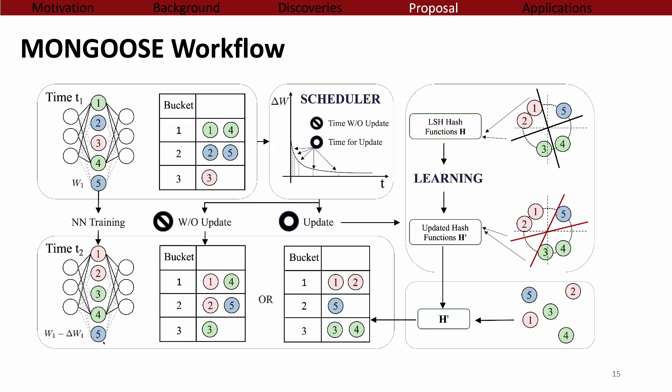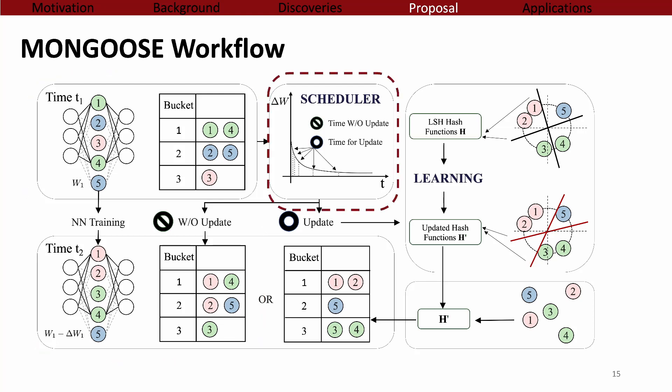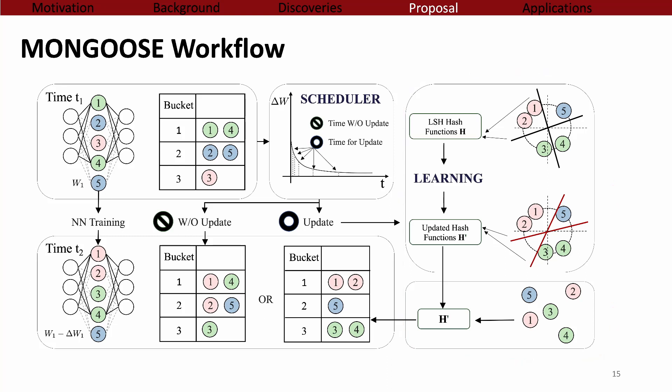Let's put things together. Here is the Mongoose complete workflow from time t1 to t2. At each step, our scheduler decides whether to perform LSH updates or not. If there is an update, we first update the hash functions and then the hash tables. In summary, based on the slowly changing weights observation, we designed Mongoose, which has a smart scheduler and a low-cost learnable LSH algorithm.